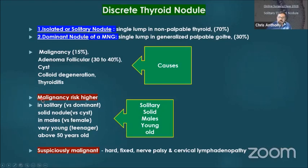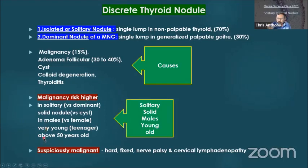The important thing is malignancy. The possibility of being malignant is higher in solitary nodules compared to a dominant nodule in a multinodular goiter, in solid nodules, and in males. Although the nodule is more common in females, if it occurs in a male there is a higher chance of malignancy. Very young and very old patients — teenagers are the most common group, and the other big group is above 50–60 — the older the patient, the higher the chance of being malignant.